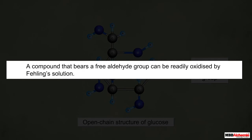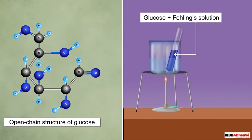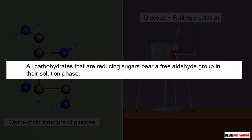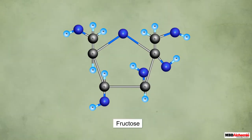A compound that bears a free aldehyde group can be readily oxidized by Fehling's solution. Thus glucose is readily oxidized by Fehling's solution and is a reducing sugar. All carbohydrates that are identified as reducing sugars bear a free aldehyde group in their solution phase.